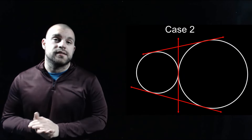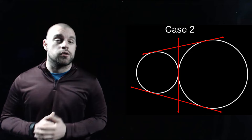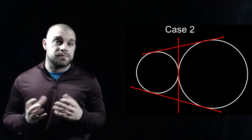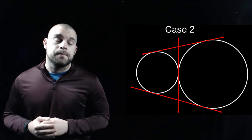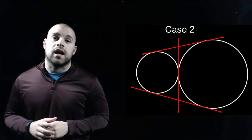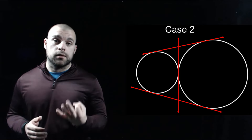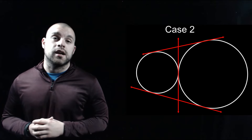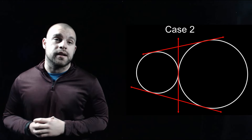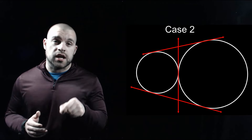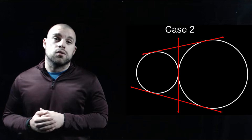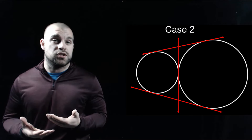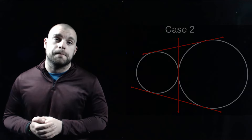Our next case is where we start to slide that smaller circle in a little bit, so the circles are just barely touching at one point. In that case we're able to draw in three common tangents. Again, we'll have our two exterior tangents on the outside. And since our circles are touching at just one point in the middle, we can draw a line perfectly between them that just hits each circle at that one intersection point.